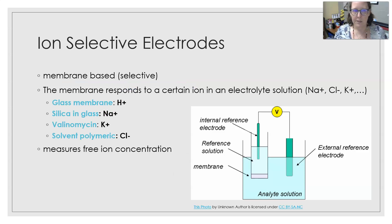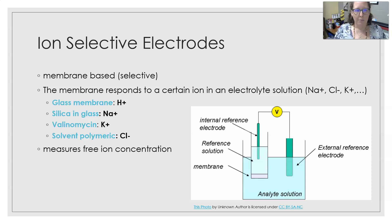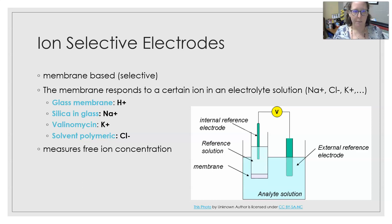One of the applications is ion selective electrodes. These are used all across clinical chemistry in the large analyzers. They are membrane-based, and that is what makes them selective. The membrane responds to a certain ion in an electrolyte solution — those ions can be sodium, chloride, potassium, etc. The glass membrane and the makeup of the glass can vary.